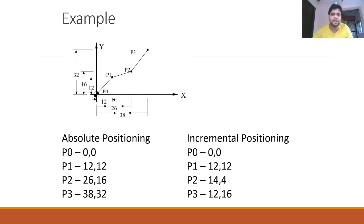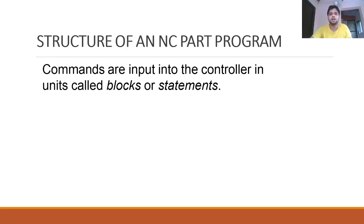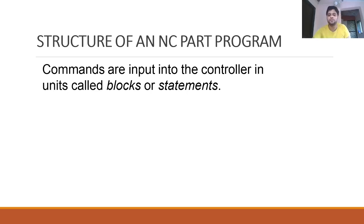Commands are input into the controller in units called blocks or statements. Every line is called a block and starts with a sequence number — letter N followed by a two or three digit number — then a block of instructions, and at the end an asterisk sign indicating end of block. Unless the end-of-block character is present, the block is not considered properly ended, after which the next block begins.